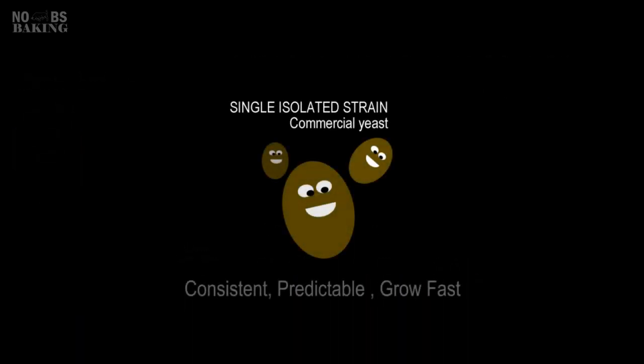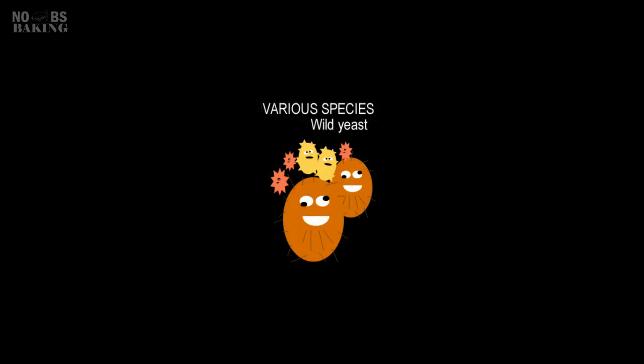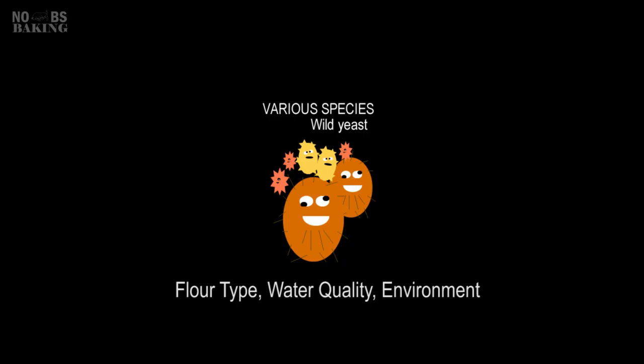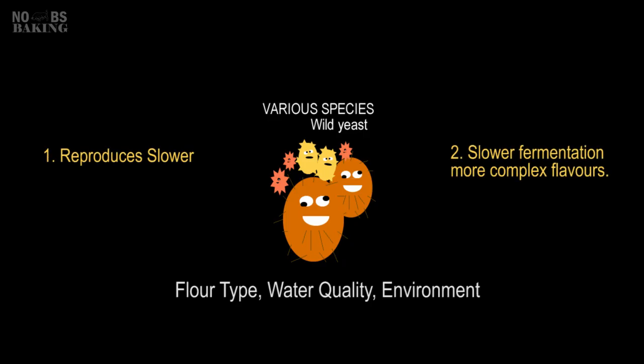Commercial yeast strains are selected for their consistency, predictability, and fast growth rates. They usually ferment sugars quicker and give uniform results in bread making. Wild yeast is less predictable, and it's affected by the local environment — such as the flour type, water, and air. The resulting bread may vary in rise time and flavor due to the diversity of yeast and bacteria in the culture.